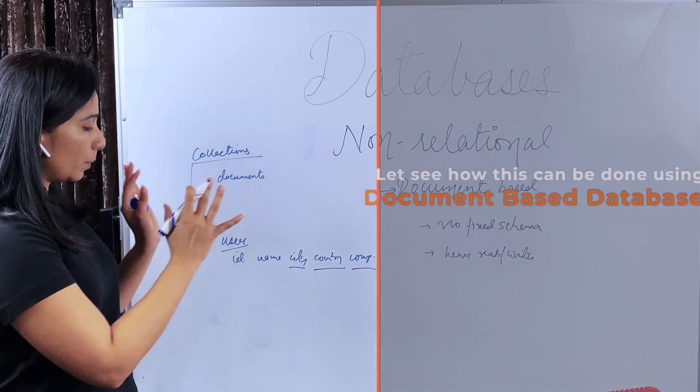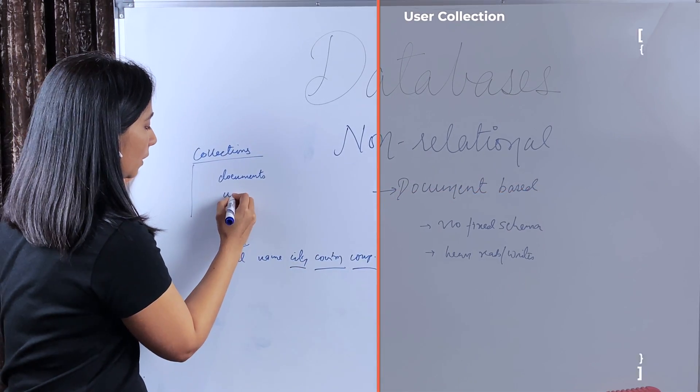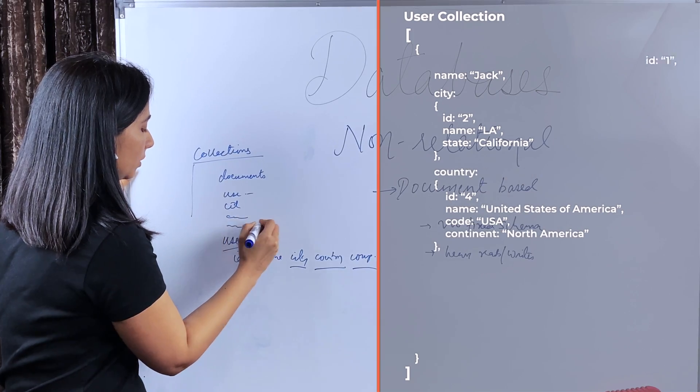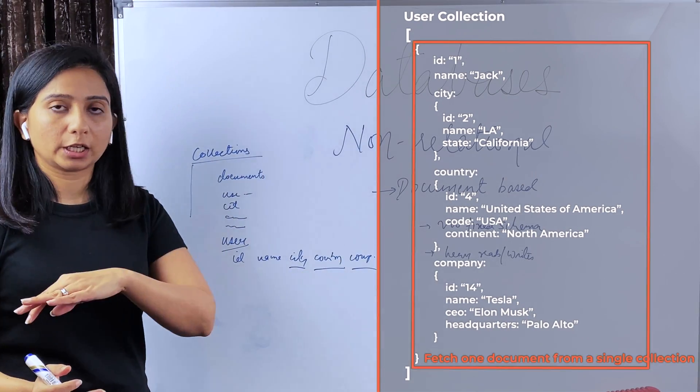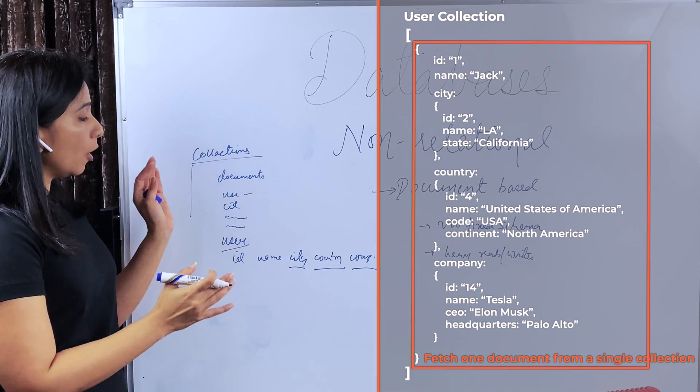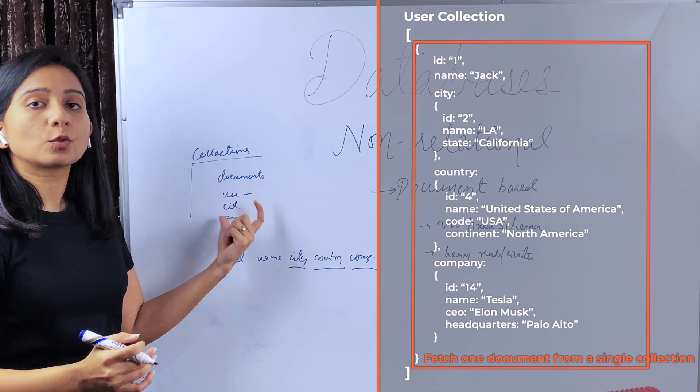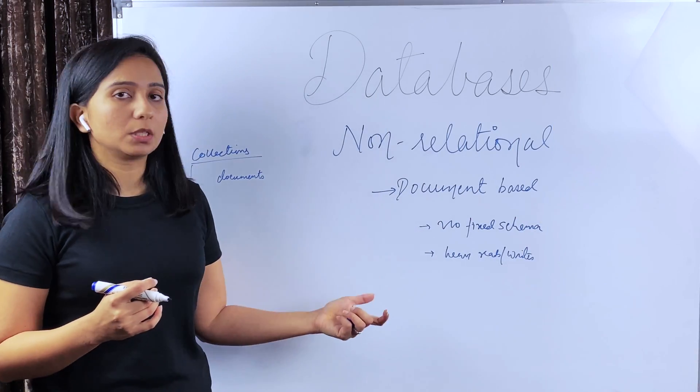On the other hand, if you put all this information in a document DB, where you have user and city and country and ID, all these details which are fetched from different tables in case of relational DB, if these are stored in the document DB itself, it just has to fetch one document.